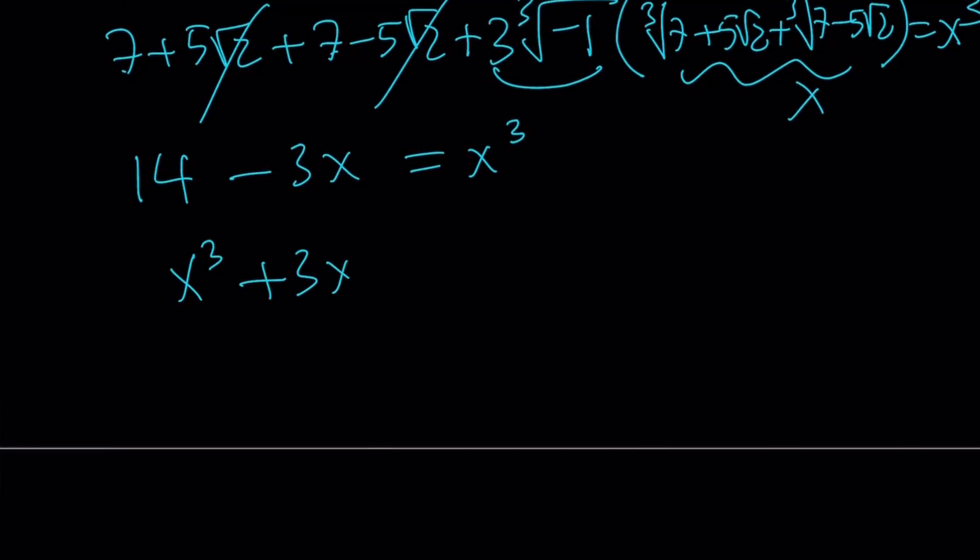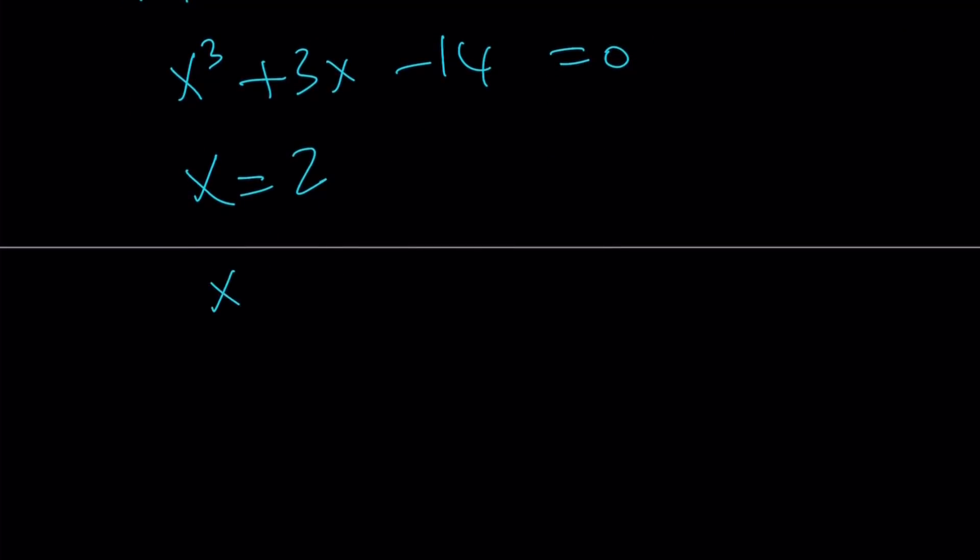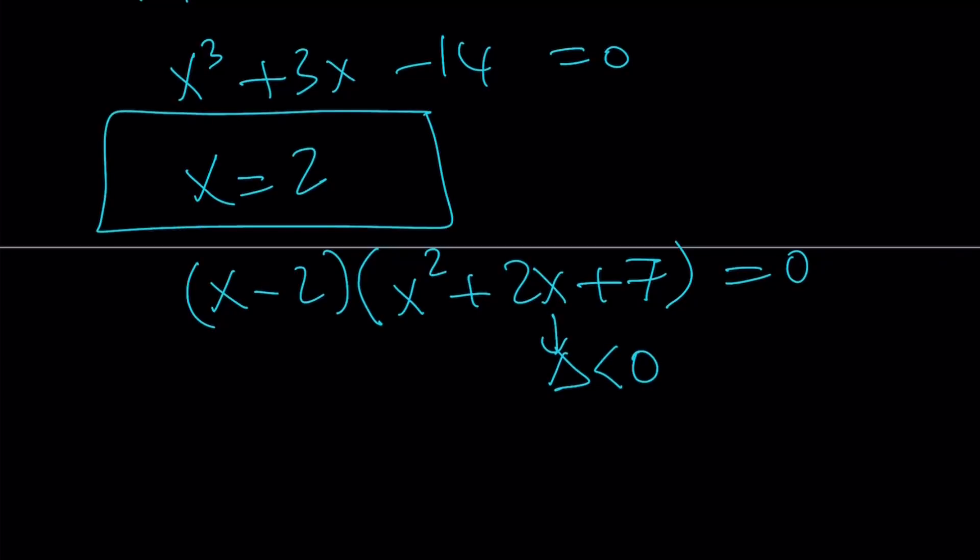If I ask you to guess any integer solutions you would probably say x equals 2 works. And when you divide by x minus 2 you'll notice that this expression can be written as x squared plus 2x plus 7 multiplied by x minus 2. And notice that this equation also has a negative delta which means it has no real solutions. Therefore the only solution happens to be x equals 2.